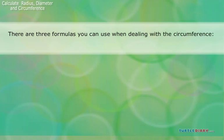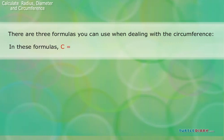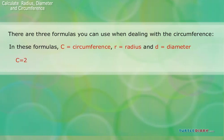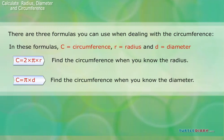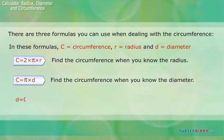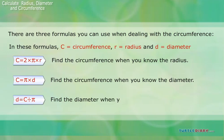There are three formulas you can use when dealing with the circumference. In these formulas, C equals circumference, R equals radius, and D equals diameter. C equals 2 times pi times R — use this formula to find the circumference when you know the radius. C equals pi times D — use this formula to find the circumference when you know the diameter. D equals C divided by pi — use this formula to find the diameter when you know the circumference.